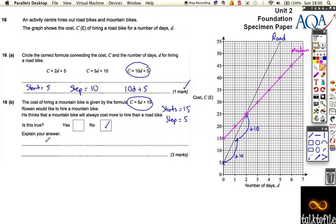Explain your answer. After two days the mountain bike will be cheaper than the road bike.